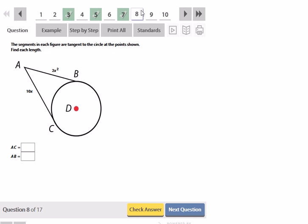These segments in each figure are tangent to the circle at the point shown, so find each length. They want to know what is AC and what is AB. Well, those are going to be congruent. When you have two tangents meeting at a common outside point, those are going to be equal. So I would have to then, in order to be able to find what the distance is, I have to write an equation that says that 2X squared is equal to 10X.